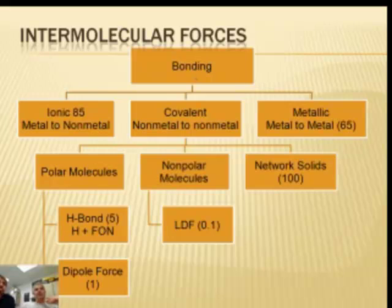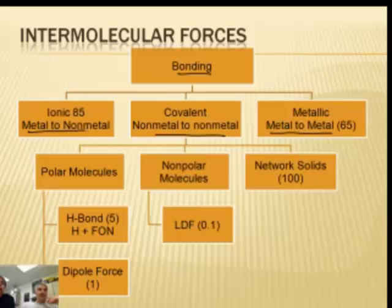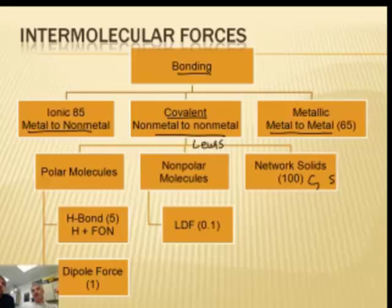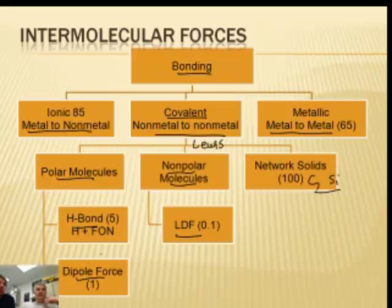Let's summarize how this all goes together. With bonding, you always have to first determine what type of compound: metal to metal, nonmetal to nonmetal, or metal to nonmetal. When it's covalent, you've got more work to do — you have to draw its Lewis structure. Unless it's just carbon or silicon, you can jump straight to network solids. If you draw the Lewis structure and it's nonpolar, then it's a London force. If it's polar, then it's a hydrogen bond or a dipole force, and you determine that by the ET phone home method. If it's a phone home molecule, it's a hydrogen bond; if not, it's a dipole. We've got one more podcast where we'll do some practice with this.